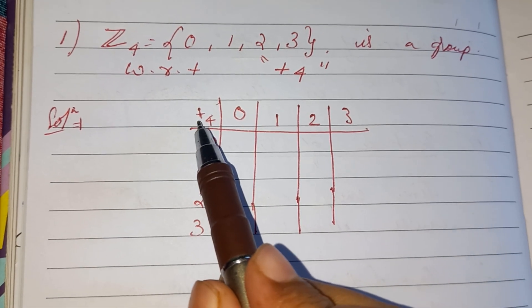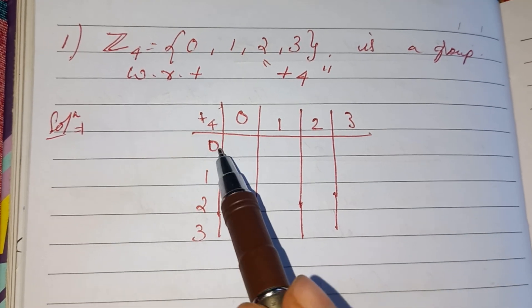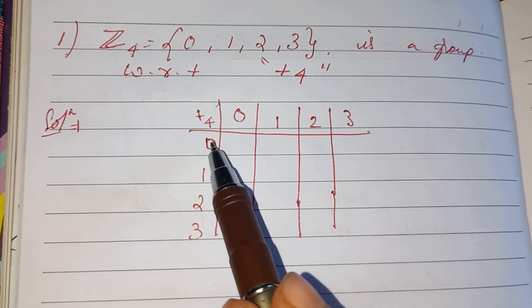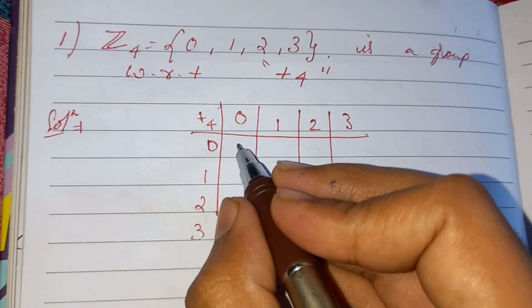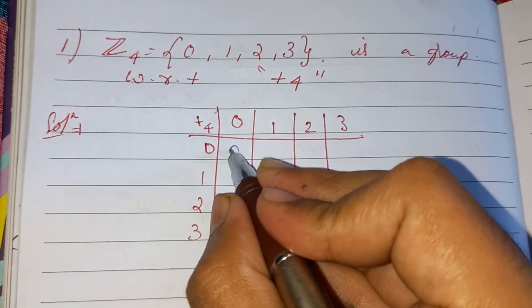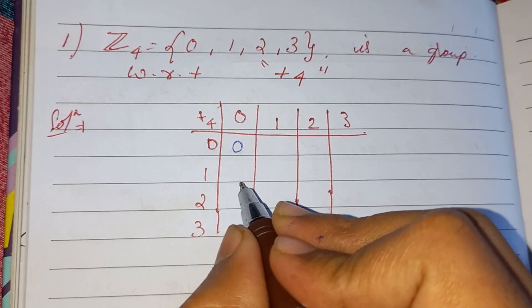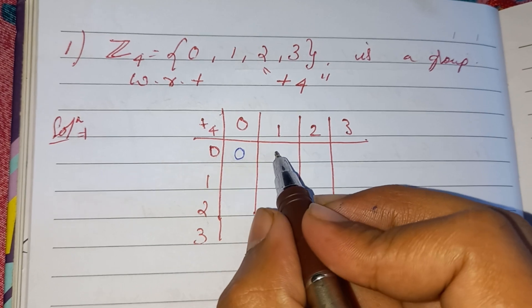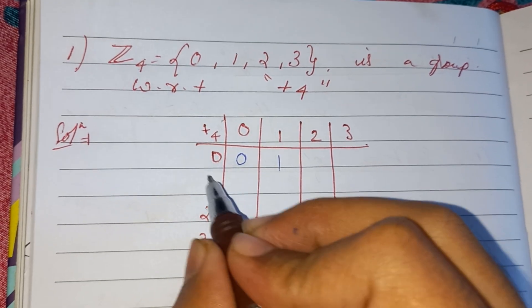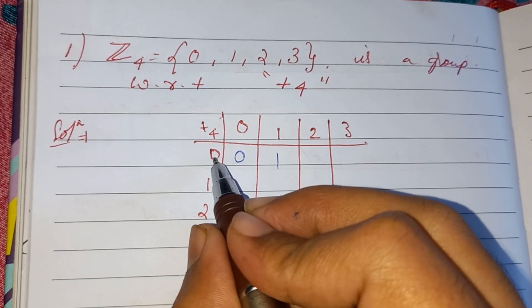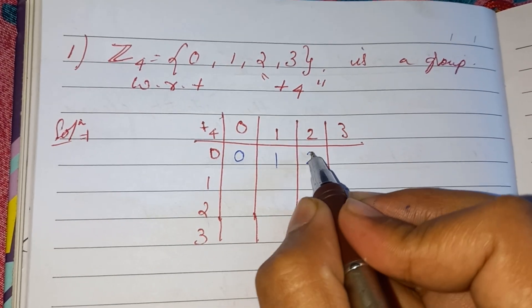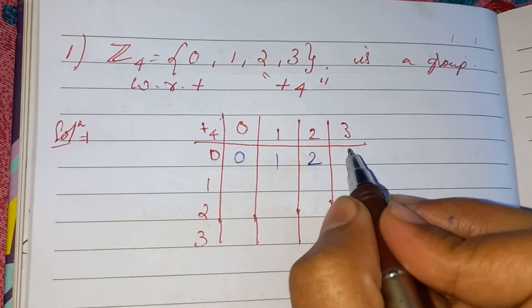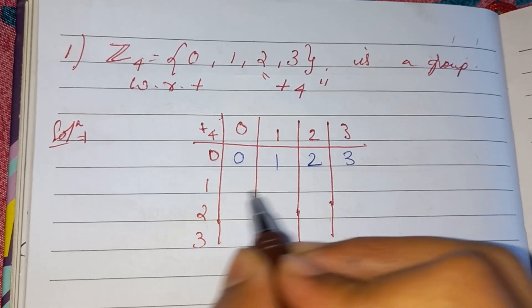Since it is addition modulo 4, first we will add: 0 plus 0 is 0, 0 plus 1 is 1, 0 plus 2 is 2, 0 plus 3 is 3.